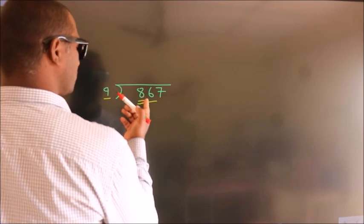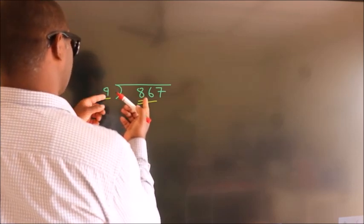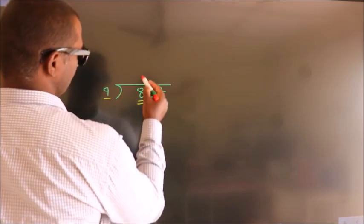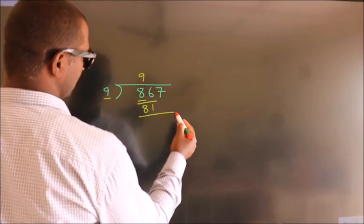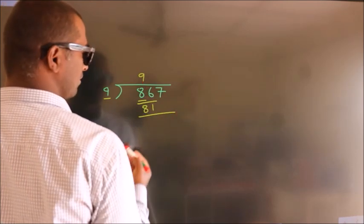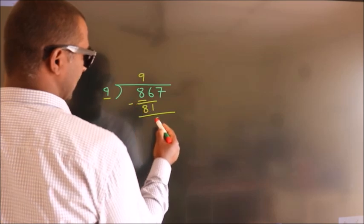A number close to 86 in the 9 table is 9 times 9 equals 81. Now we should subtract, we get 5.